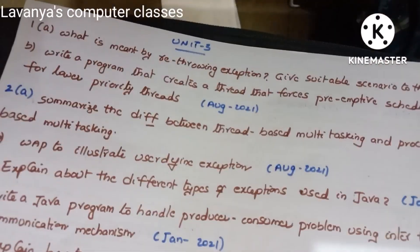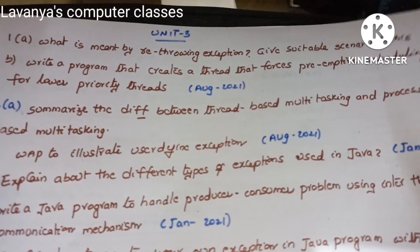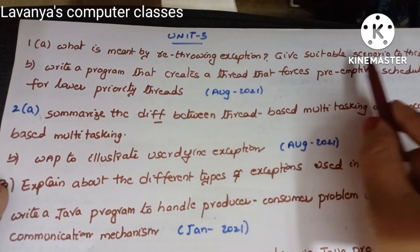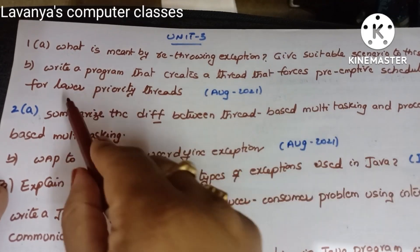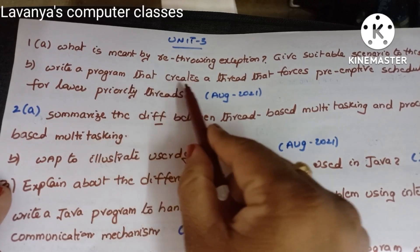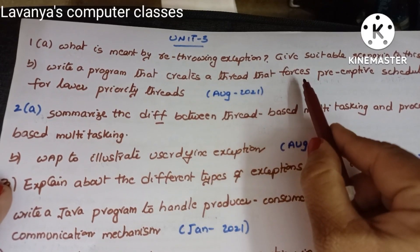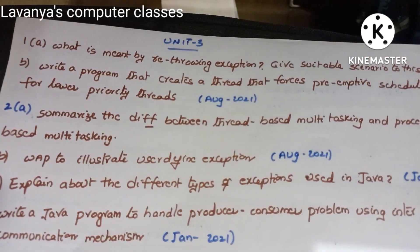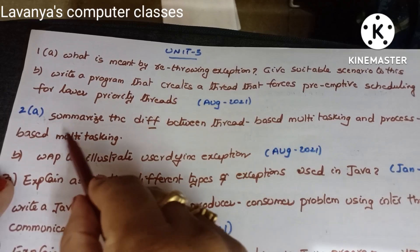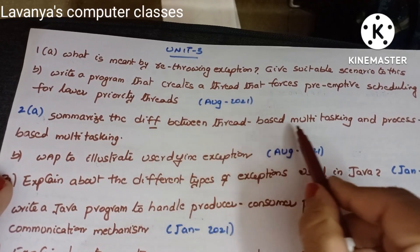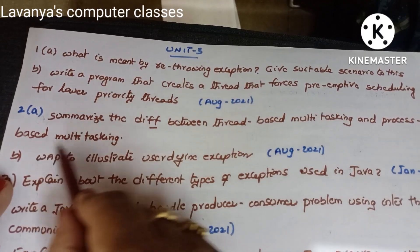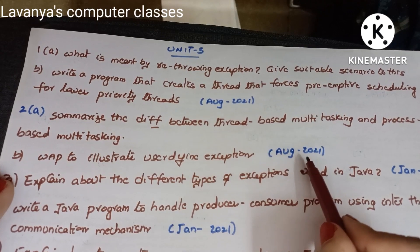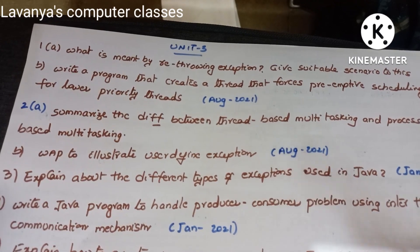Now unit three questions: 'What is meant by throwing an exception? Give a suitable scenario.' Next, 'Write a program that creates a thread that forces preemptive scheduling for lower priority threads' — August 2021. Then, 'Summarize the difference between thread-based multitasking and process-based multitasking,' and 'Write a program to illustrate user-defined exceptions' — August 2021.